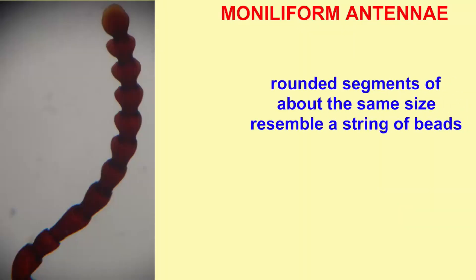In the moniliform antennae found in some beetles, the segments are rounded and are about the same size, resembling a string of beads.